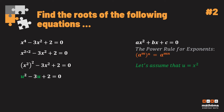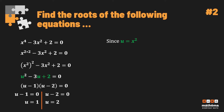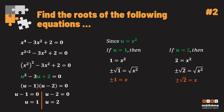Using the AC method again, c = 2. We look for factors of 2 that add to negative 3: negative 1 and negative 2. Negative 1 plus negative 2 gives negative 3. So we write (u − 1)(u − 2) = 0. Equating each factor to zero gives u = 1 and u = 2. Since u = x², if u = 1 then x = ±1, and if u = 2 then x = ±√2.